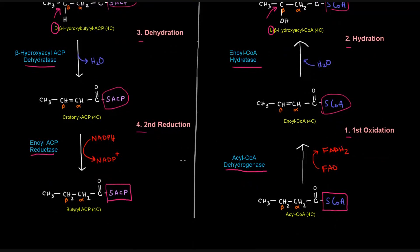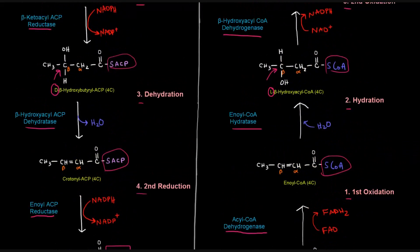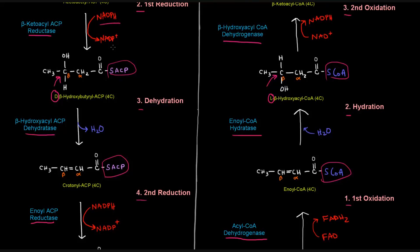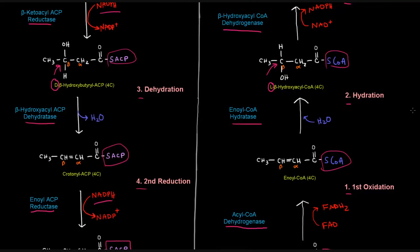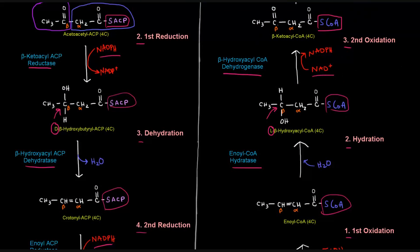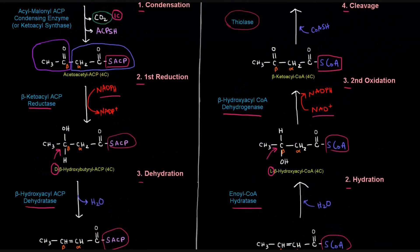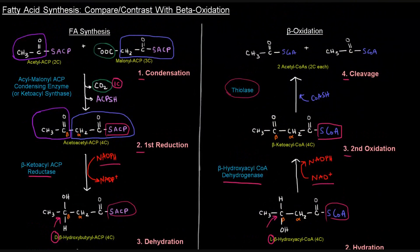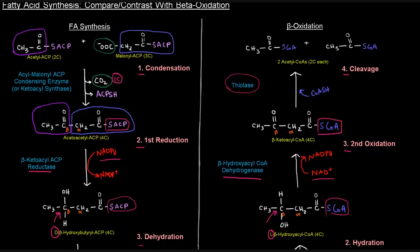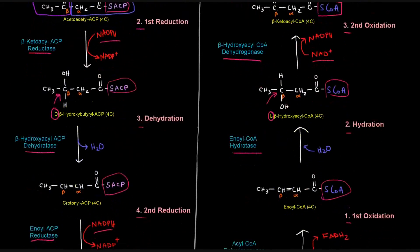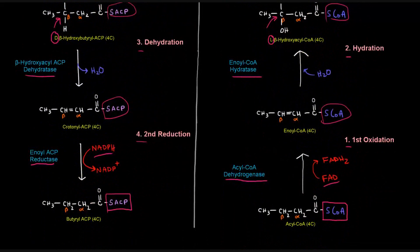One more thing is that both reduction reactions in fatty acid synthesis require NADPH, whereas in beta-oxidation, the two different oxidation steps — one requires FAD and one requires NAD+. That's also something to note. I kind of just wanted to have a side-by-side comparison so you guys can visualize it and maybe find that helpful. I really hope you did find this video helpful. Thank you for watching.